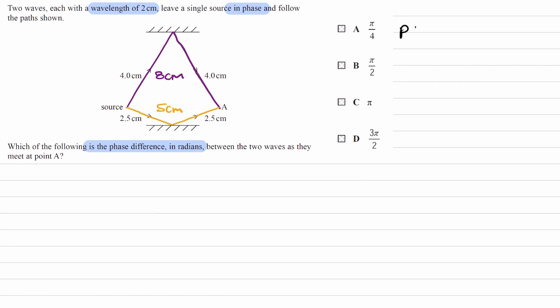So then we can work out the path difference. So the path difference is just the difference in length of these two paths. And that would end up being 8-5, which is 3 cm.